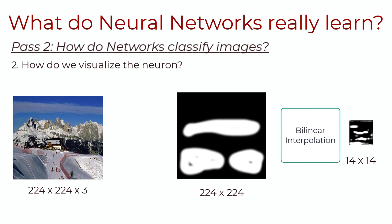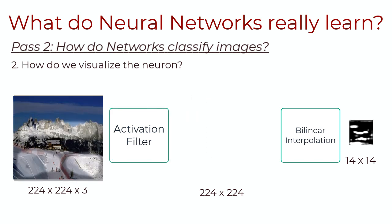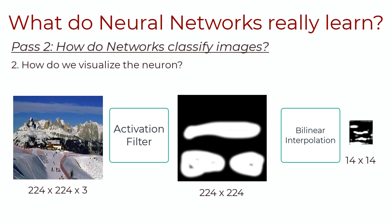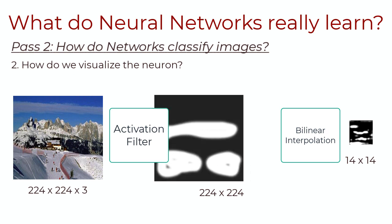And two steps to accomplish that are, first we need to scale this image, 14x14, to be the same size as the image, which is that 224x224. And then we would apply the result to the original image as a feature map. We can do the first step with an upsampling technique. One such technique is bilinear interpolation. And the second part we can run by using an activation filter. Once we have the activation mask and we apply it onto the image, we can visually see what the filter has actually learned with respect to that image. For example, we would be able to determine that this particular filter is a snow detector.